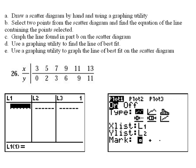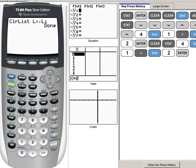Now we're going to learn how to enter data into our list. We have a problem that we're going to be working through — it may take a few videos to get through it. Our very first instructions say to draw a scatter diagram by hand and using a graphing utility. Here is our problem — if you need to pause and write those down, go ahead. Now I'm going to switch over to my calculator view so we can start putting this in.